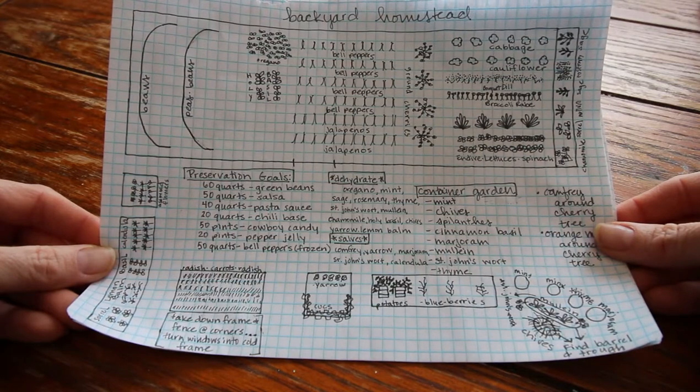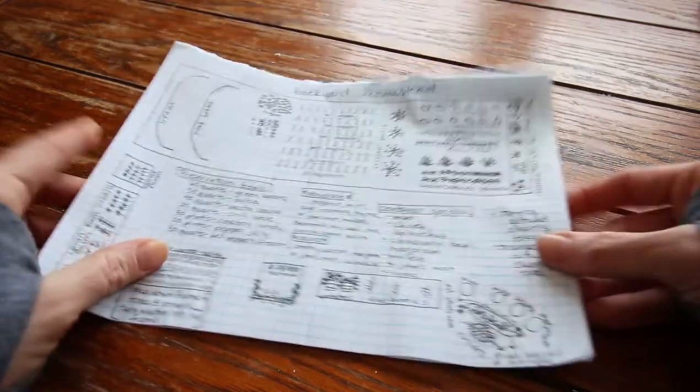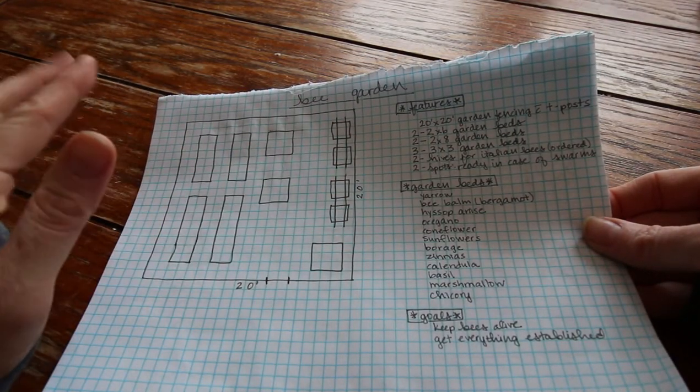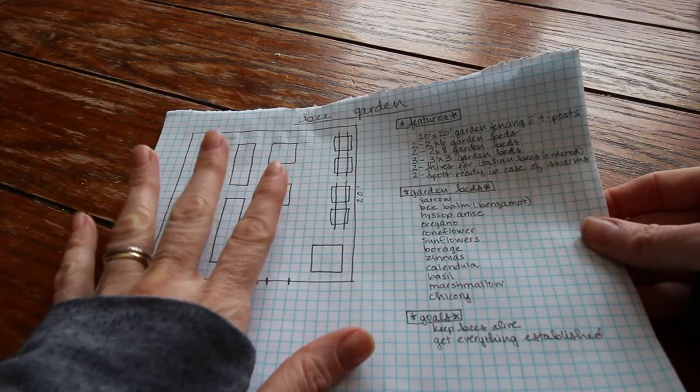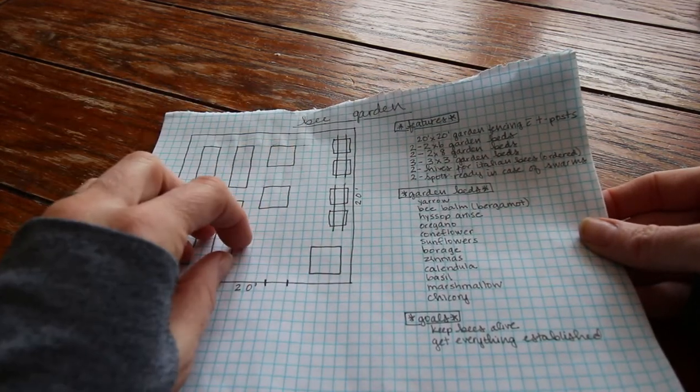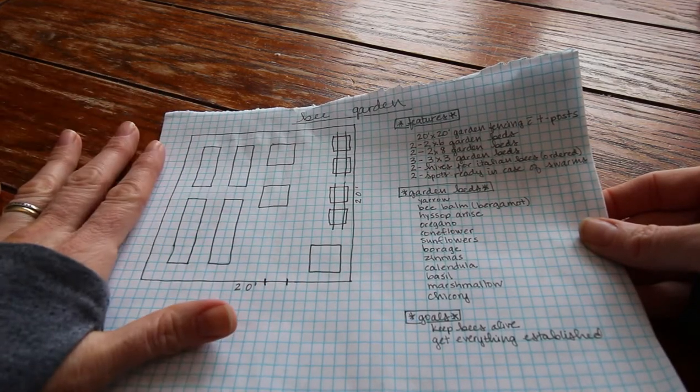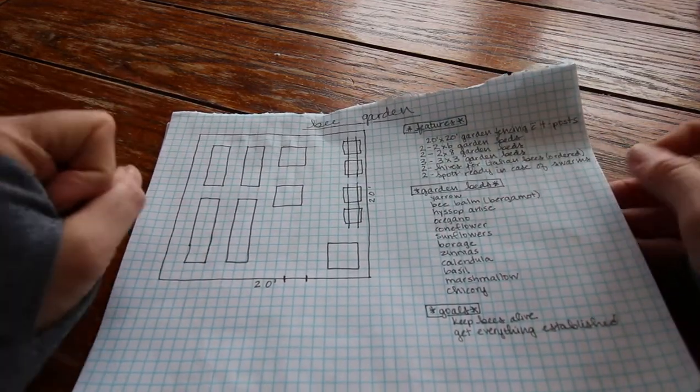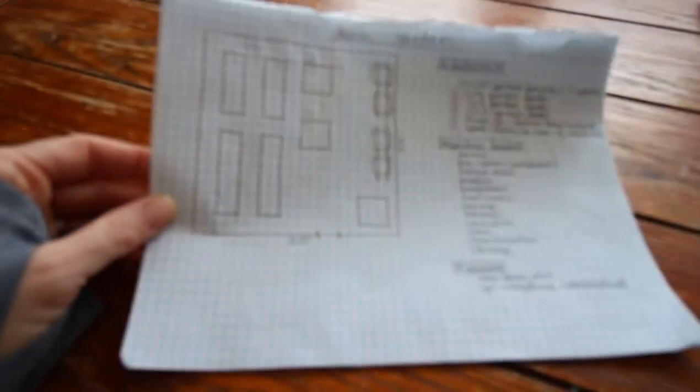We are adding bees. It is a done deal. I have the hives, they are ready to go. The bees are ordered, we are getting Italians. I'm very excited, we got them from a local place about an hour, hour and a half away from me.